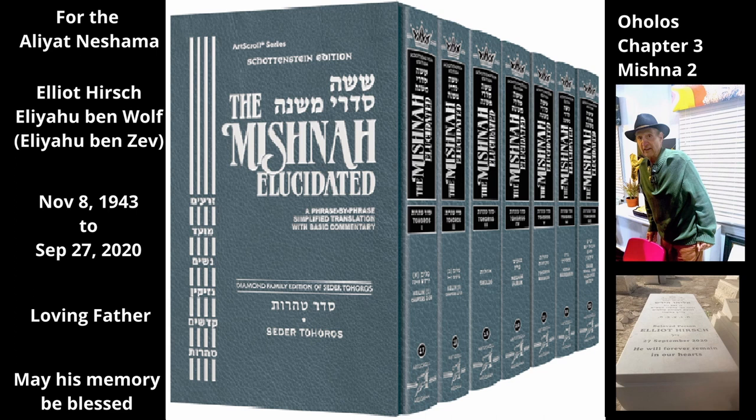If a revius of blood from a corpse was absorbed into the dirt floor of a house, the house is tahor — any person or item that entered the house after the blood became absorbed remains tahor. Since once the blood is absorbed into the ground, it no longer transmits Tuma.